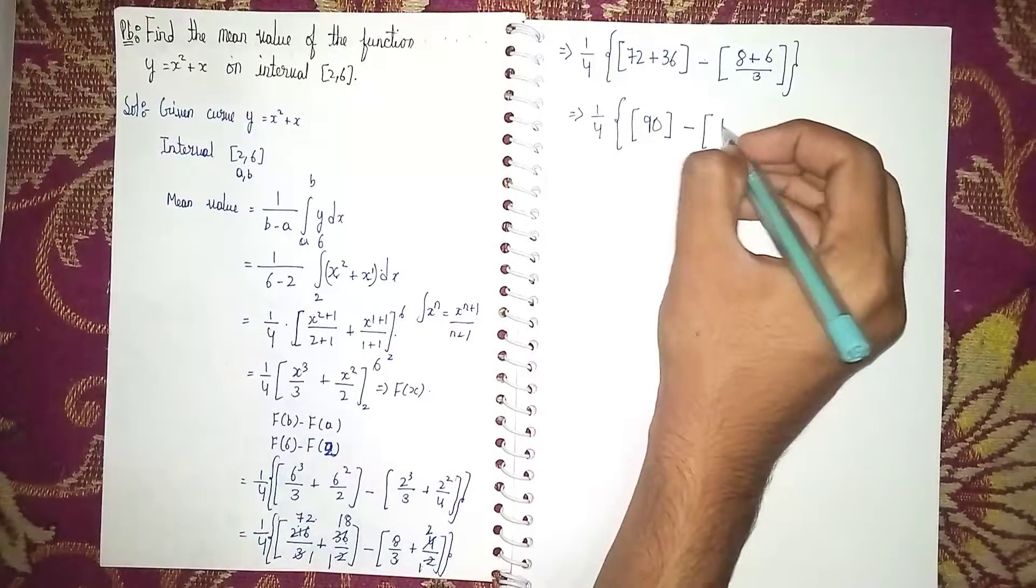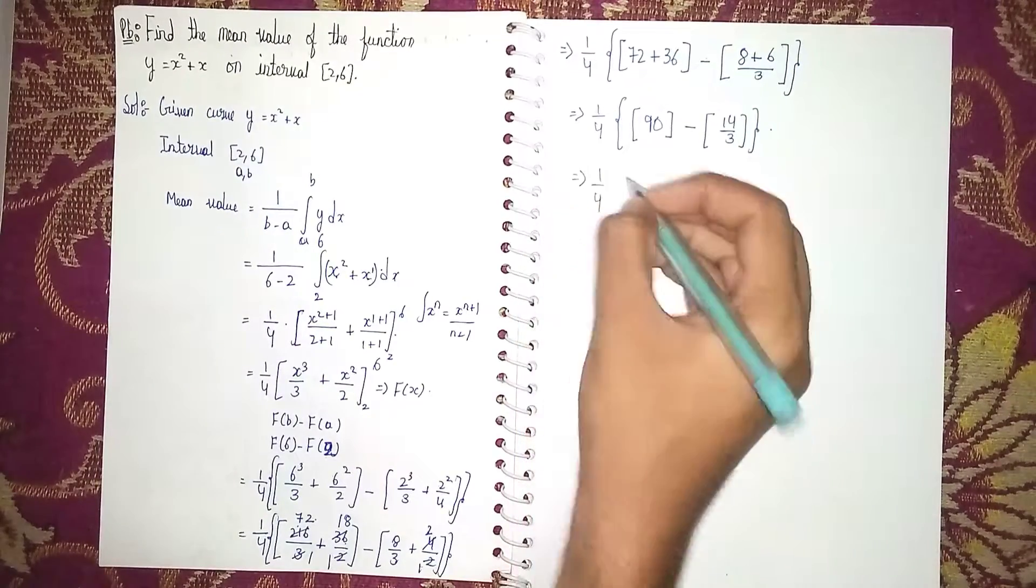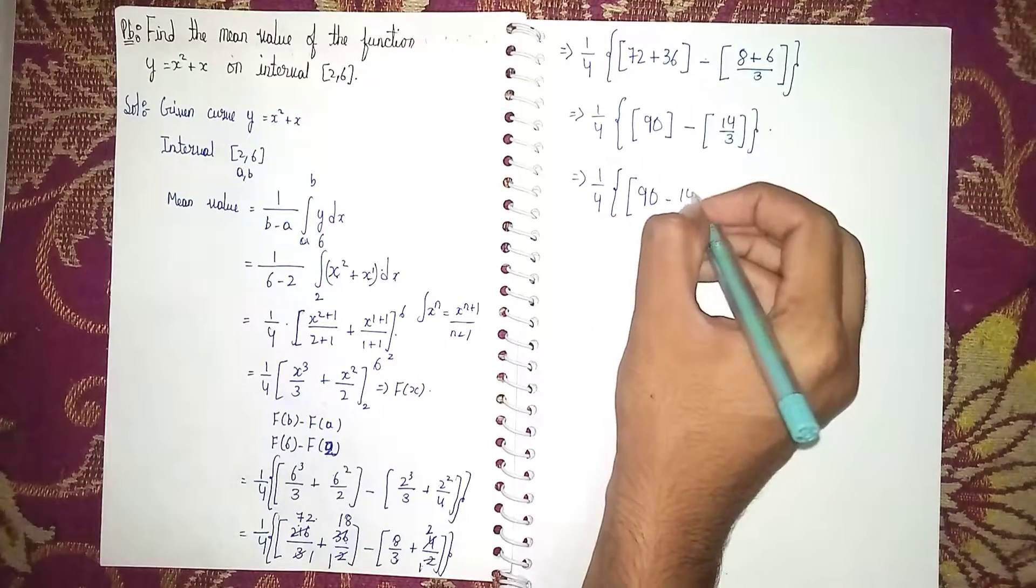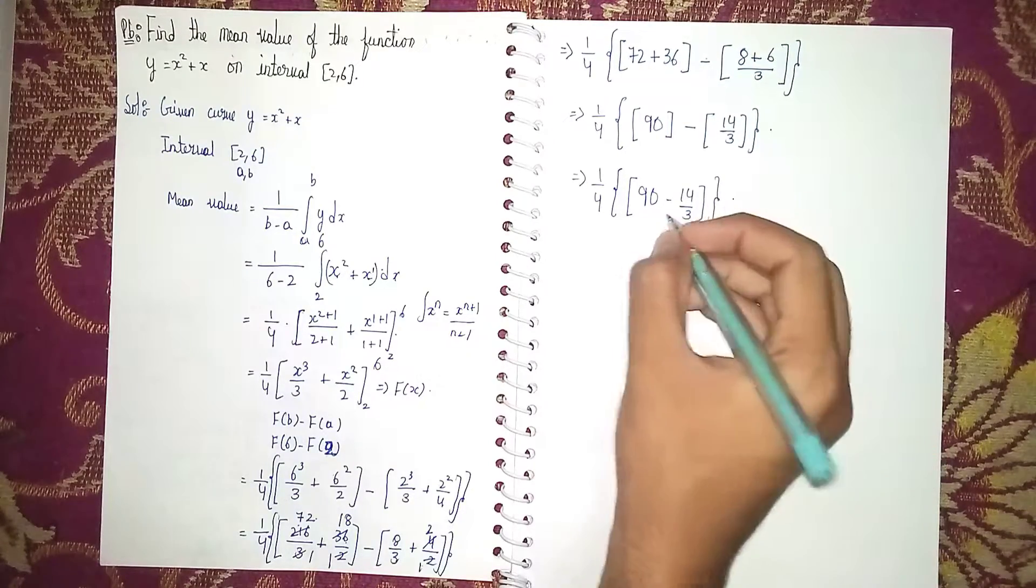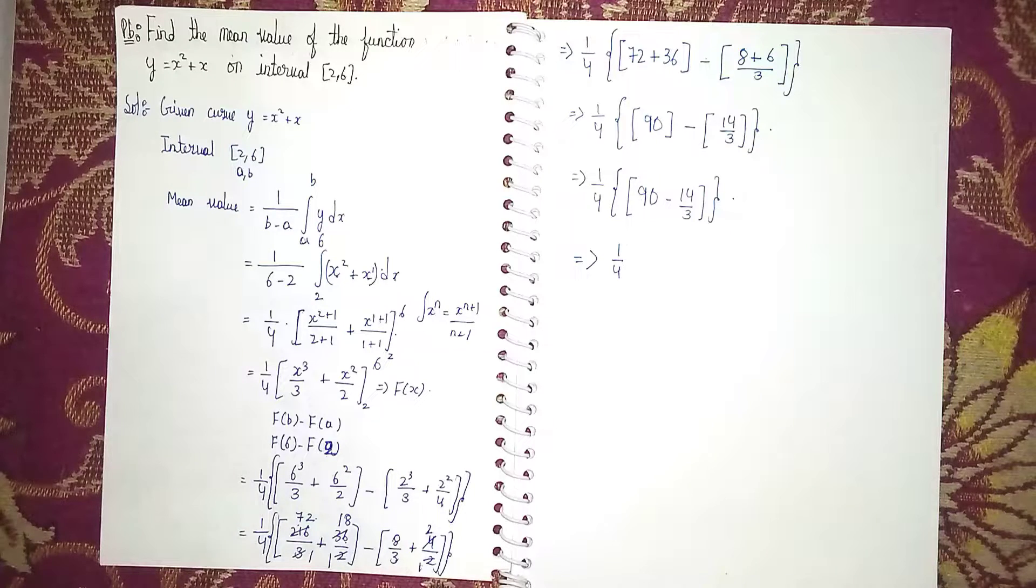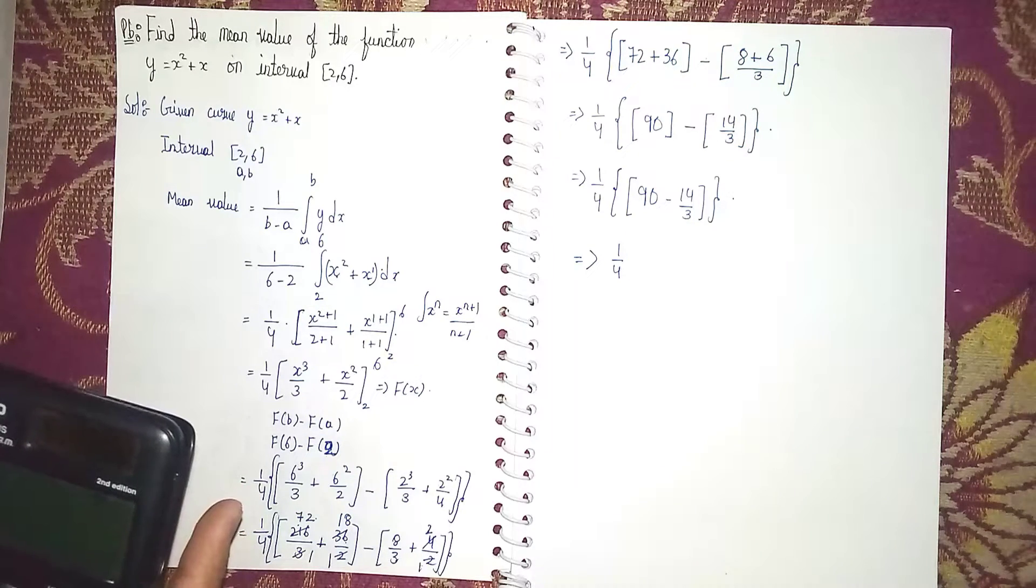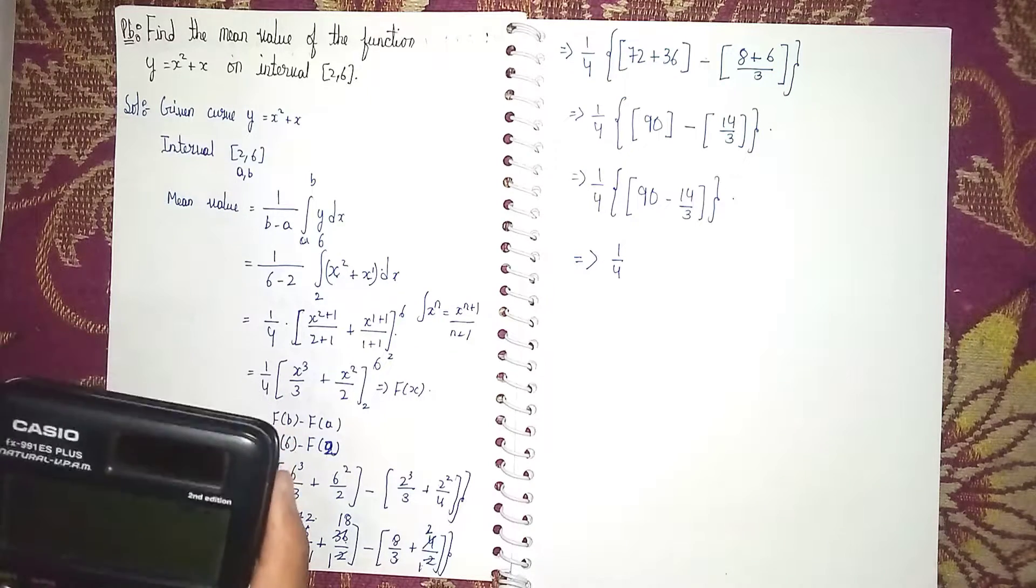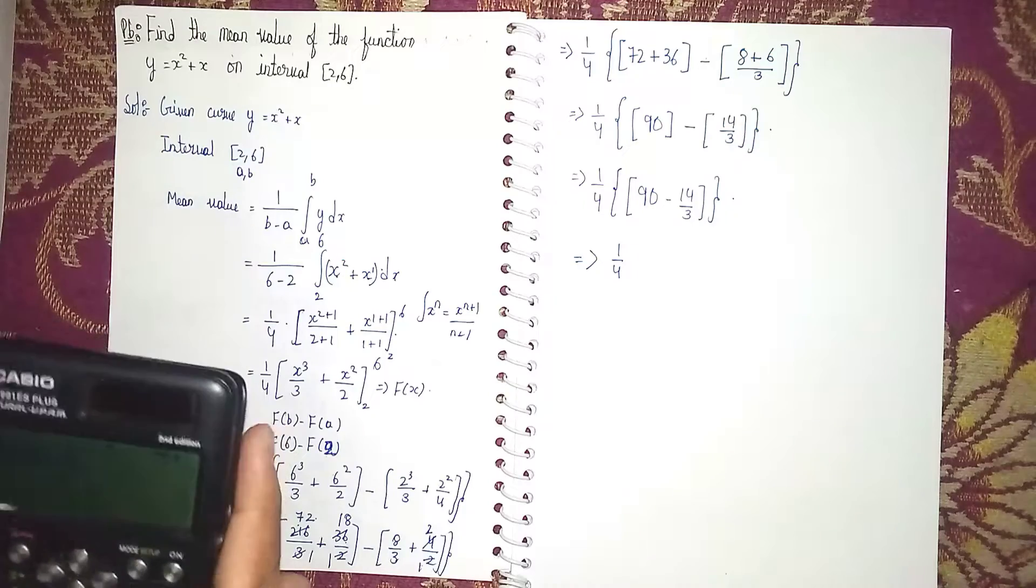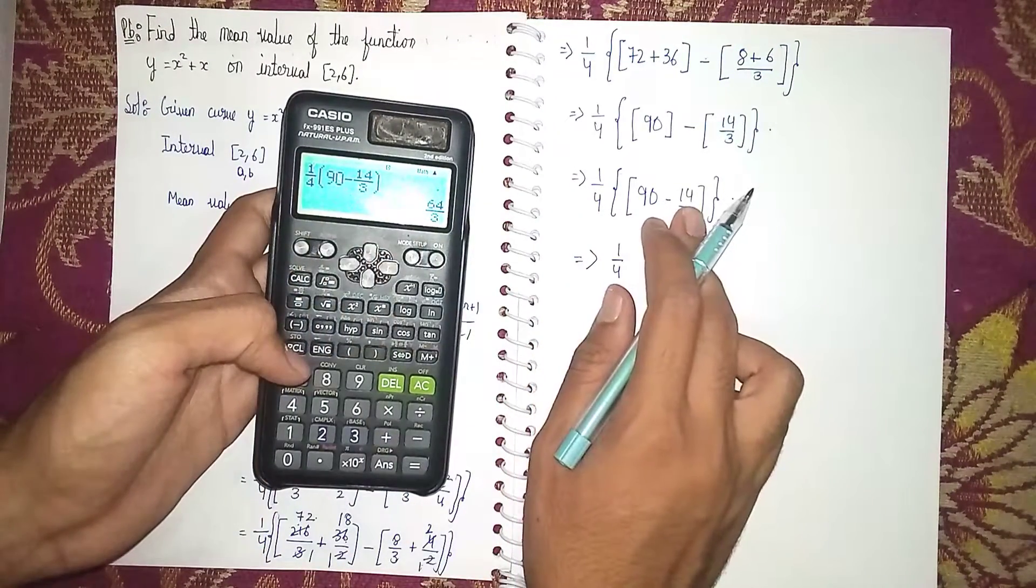It becomes 1/4 × (90 - 14/3). Now in calculator we get the answer: 1/4 × (90 - 14/3) = 64/3. This is our answer.